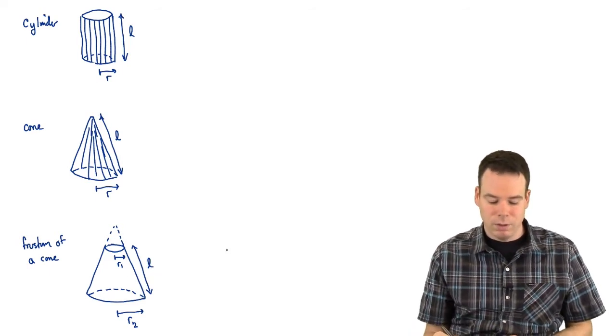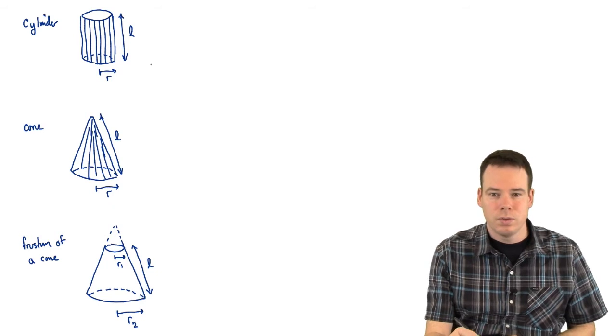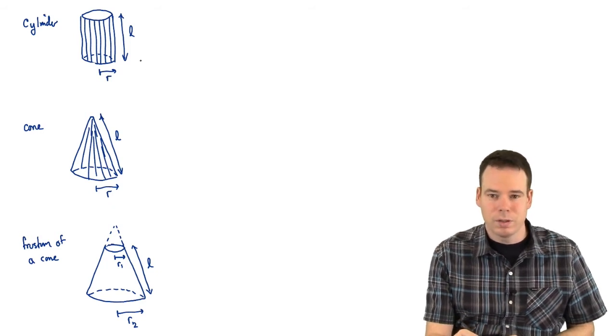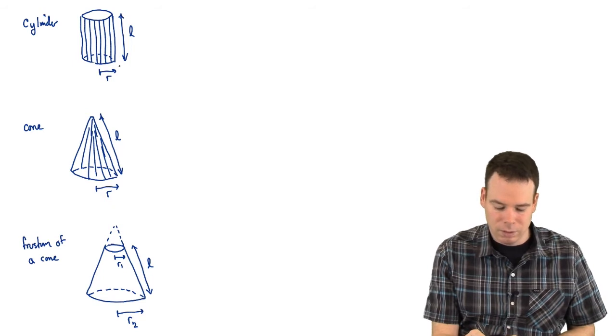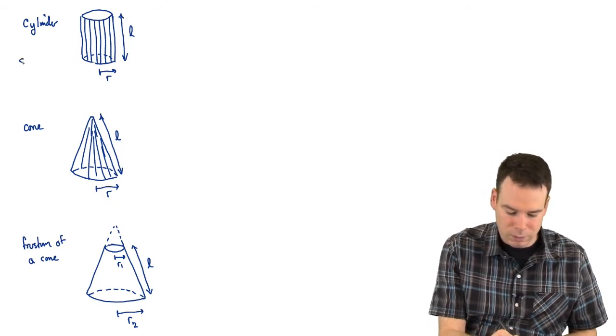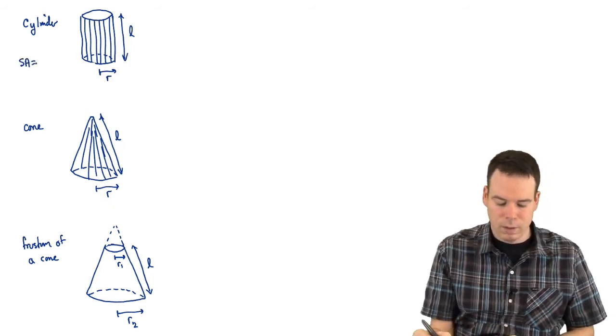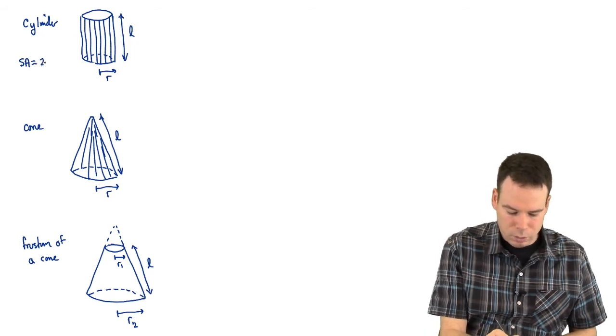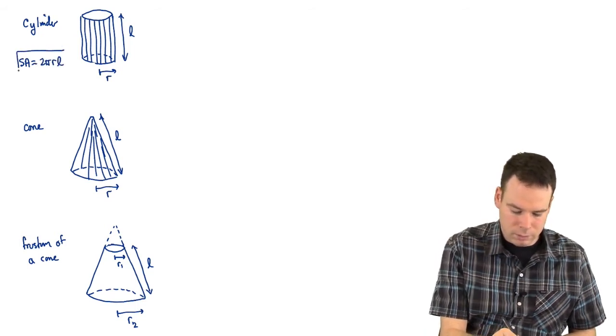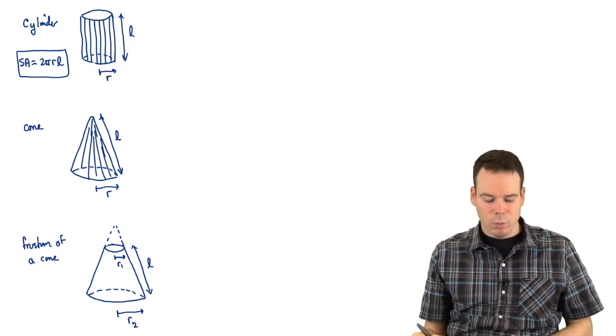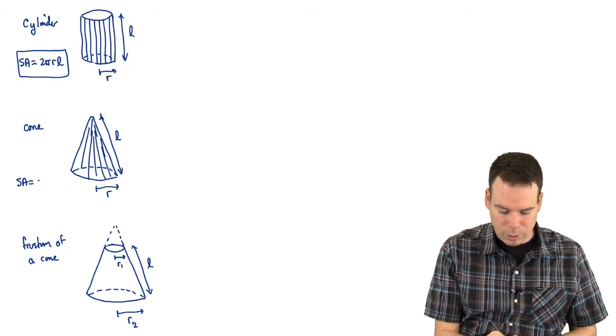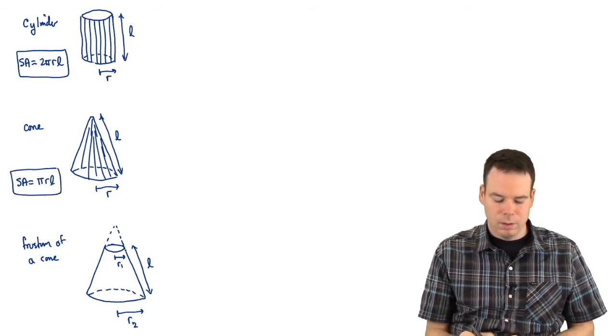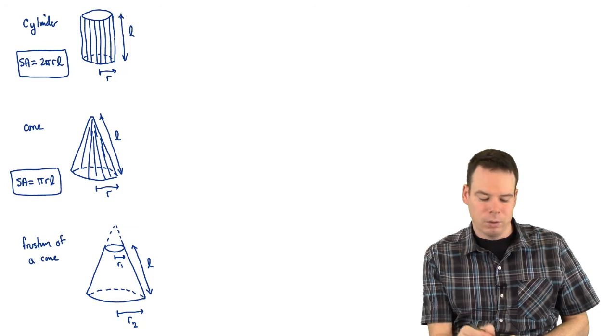We want to know the surface area of this. I'm just going to write down what the surface area is and then we'll verify these are the surface areas. What is the surface area of a cylinder? Well the surface area of the cylinder is 2πRL. What about the cone? The cone turns out to have surface area πRL, so it's half the area of the corresponding cylinder.